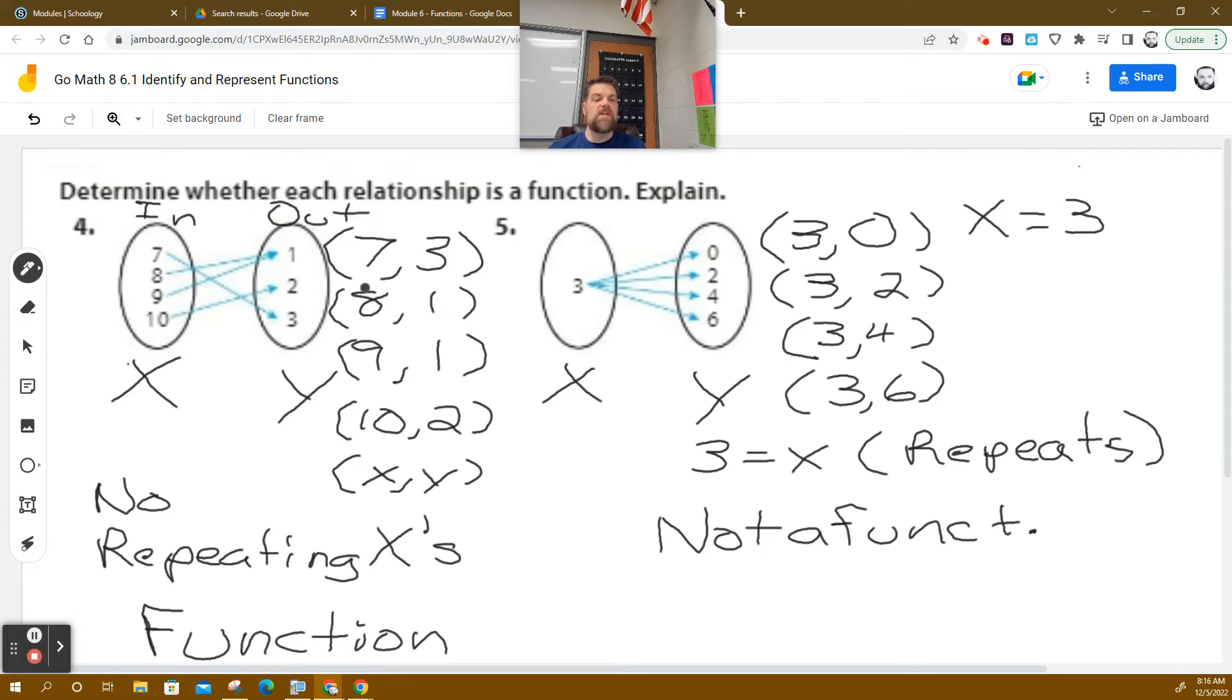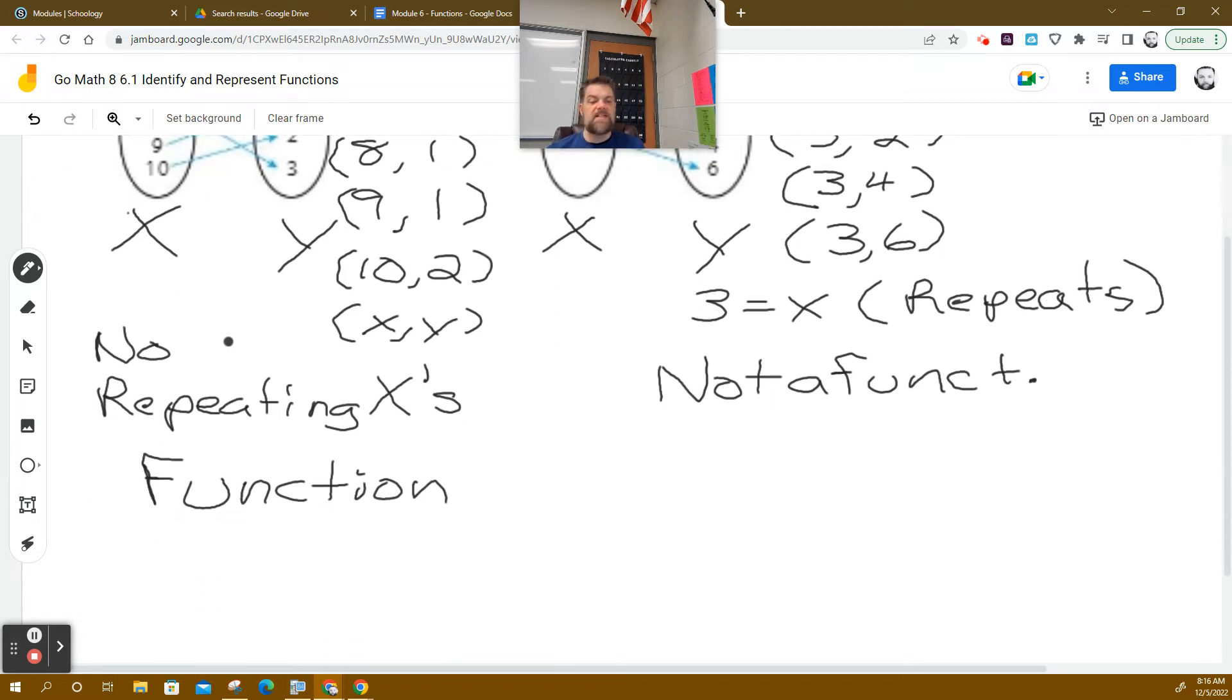So for each unique input, or for each input value, I'm going to have one unique output. Also, when we map it like this, there should only be one arrow from the X. So one arrow per X per X value. I'm saying the words.